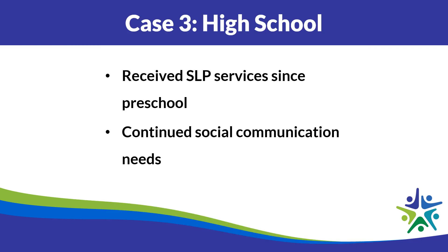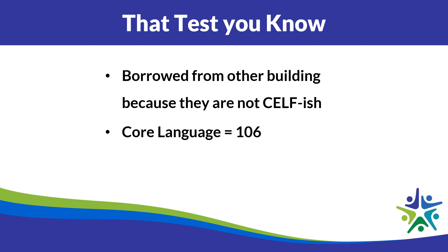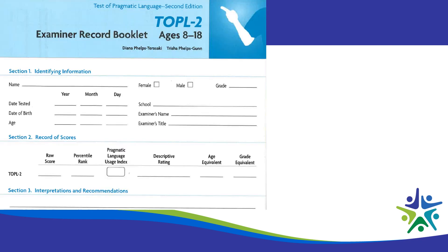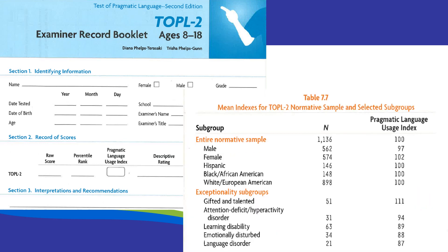Our final case is a high school student who has received services since preschool with continued social communication needs. The core language score is a 106 — well within the normal range, no significant discrepancy there. Looking in the test cabinet, we have the Test of Pragmatic Language, which seemed appropriate. Digging into the test manual, there was some reliability and validity data, but no sensitivity and specificity — it didn't tell us how well this test identifies kids with certain types of diagnoses or profiles.